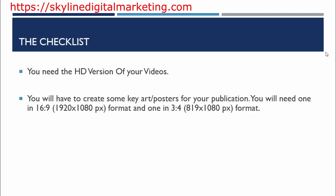The second thing is that you will have to create some key art or posters — background images, practically promotional images — for your publication, for your videos that you will publish on Amazon Video Direct. You will need one in 16:9 format, with the pixel dimensions provided, and one in 3:4 format, again with the pixels specified, so you can know exactly how to create these images. I will show you exactly what tools you can use to create these images very fast and easily, in a way that they also look very attractive.